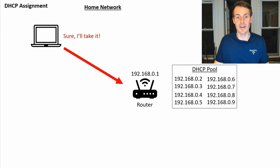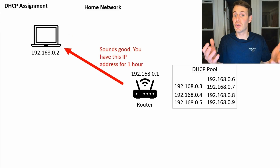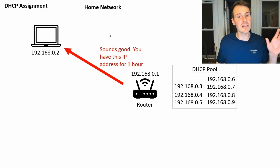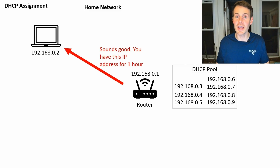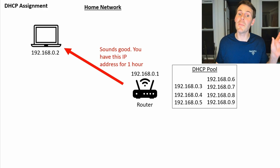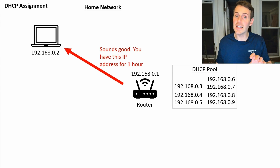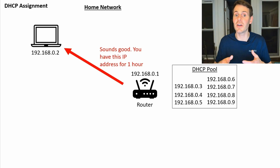When your router assigns this IP address to your laptop, it's with an associated lease time — for example, you can have this IP address for one hour. The IP address comes out of the DHCP pool so it doesn't get assigned to any other devices. Along with this IP address, a few other network configuration settings are sent to your laptop: the IP address of the default gateway (which is your router's IP), the subnet mask of the assigned IP address, and the DNS servers used by your router, so the laptop knows where to look when finding websites.